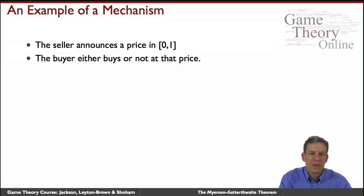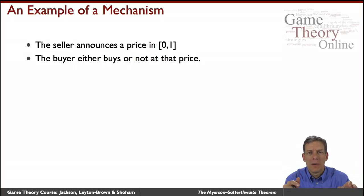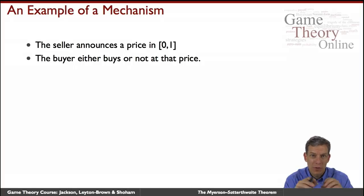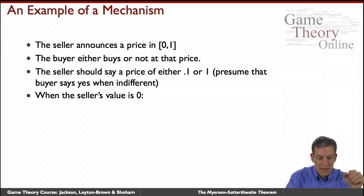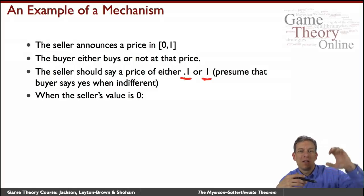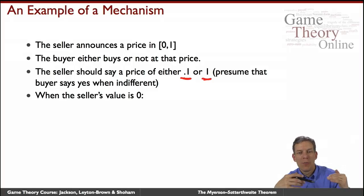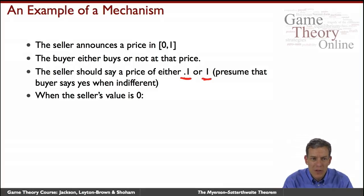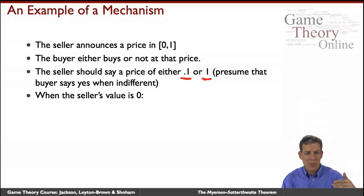Let's think of a mechanism where the seller gets to name any price — a simple take-it-or-leave-it offer. The seller just posts a price and the buyer either buys or not. The seller should either sell at a price of 0.1 or 1. Selling at 0.5 doesn't make sense — you could charge 0.6 and the high-value buyer would still buy, while the low-value buyer won't. Once you go above 0.1 you might as well push the price all the way to 1.